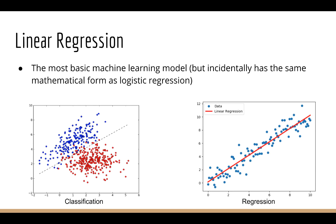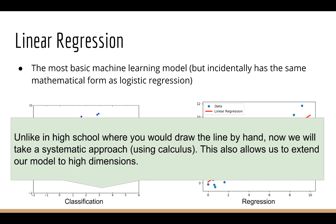But even before you can learn about logistic regression, it is always good to start with the most basic machine learning model: linear regression. Both logistic regression and linear regression use the same underlying model — a line. The difference is logistic regression is a classification algorithm, whereas linear regression is for regression. In simpler terms, linear classification tries to draw a line between the red dots and the blue dots; linear regression tries to find the line of best fit. Most of us have plotted lines of best fit in grade school. The difference now is that instead of drawing the line by hand, we take a more systematic approach that allows us to work in much higher dimensions.